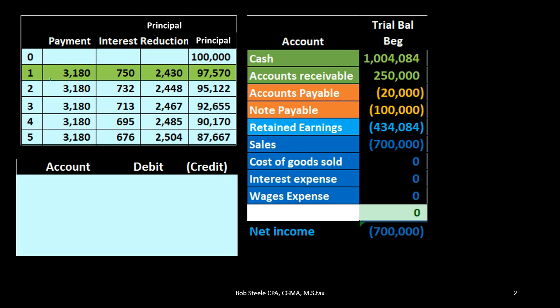Otherwise, we need the amortization table. Most loans only give us the terms but not a table breaking out how each payment is allocated between interest and principal. In that case, we can derive it in Excel, which we've seen in a prior presentation. Now that we have it here, we're just going to make these payments, and after each payment the loan balance on our books will match the new balance on the amortization table.